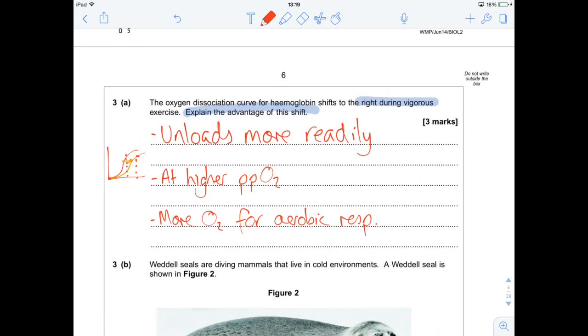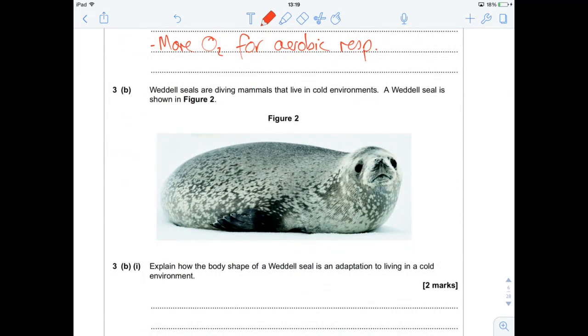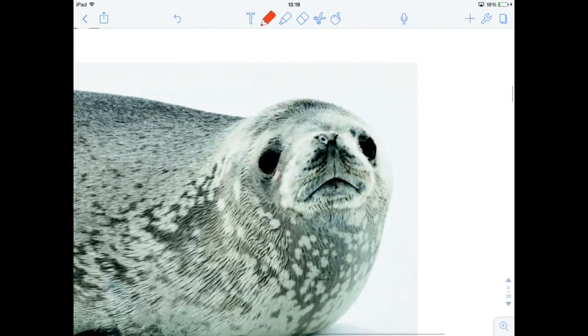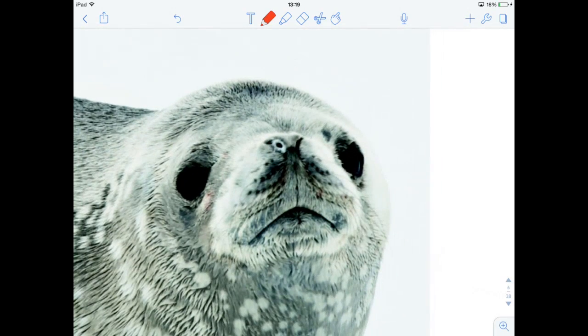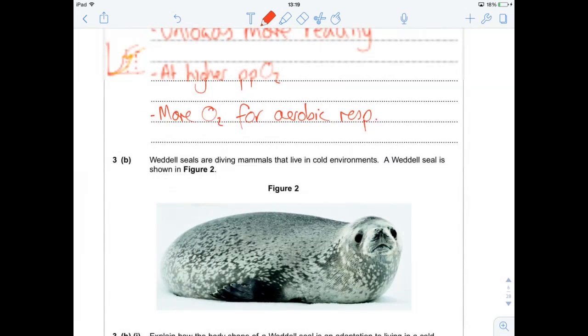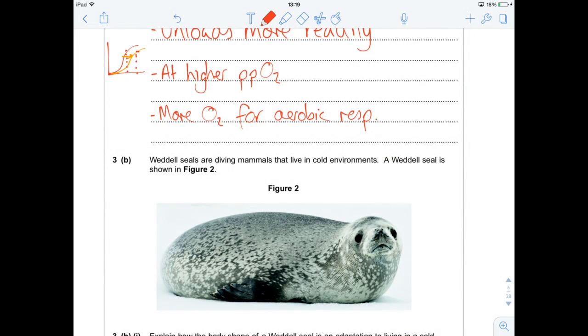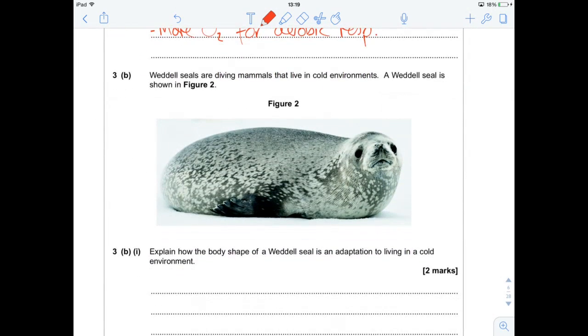Okay. Here we've got a picture of a Weddell seal. Look at that face. Isn't he the most cutest thing you ever did see? So he lives in really cold environments, and our Weddell seal just here has a very particular body shape. He's fat, he is chunky, he is blubbery. But it's the shape it's asking about.